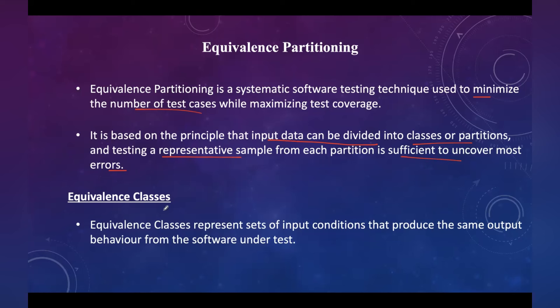An equivalence class represents a set of input conditions that produce the same output behavior from the software under test. Equivalence classes are groups of inputs that are treated the same by the system. Each class can be either valid, meaning an acceptable input, or invalid, meaning an unacceptable input.